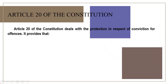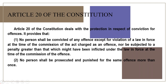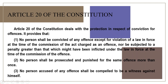Article 20 of the Constitution deals with the protection in respect of conviction for offenses. It provides that no person shall be convicted of any offense except for violation of a law in force at the time of commission of the act charged as an offense, nor be subjected to a penalty greater than that which might have been inflicted under the law in force at the time of the commission of the offense. Clause 2: no person shall be prosecuted and punished for the same offense more than once. Clause 3: no person accused of any offense shall be compelled to be a witness against himself.